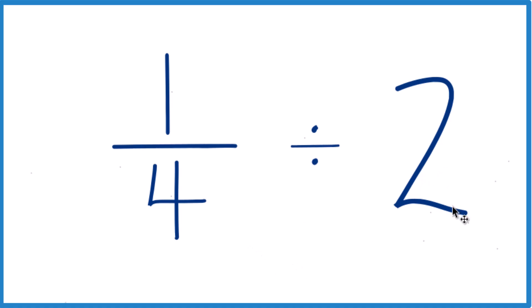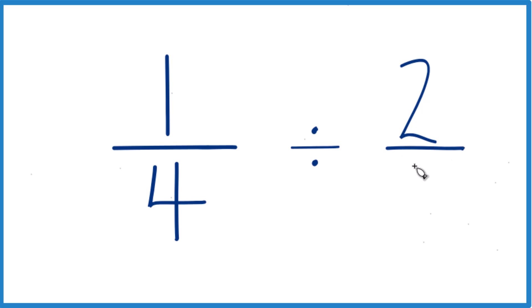The way I like to think about it is take the two, and instead of two, we're just going to call it two over one. Two divided by one, that's still two. Everything lines up kind of nice at this point.